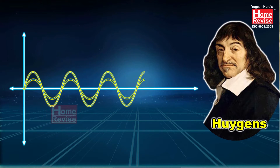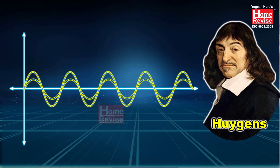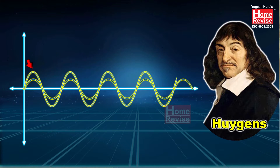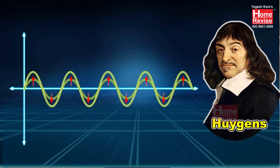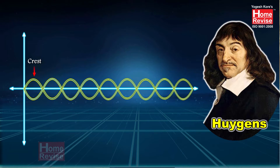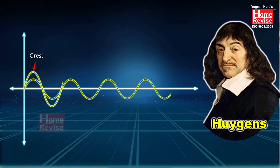Now, since light travels in the form of waves, if we consider two light waves coming together, the second and third light wave will be coming as well. Now if these waves interfere with each other, it is possible that the positive part — called the crest — and the negative part — called the trough — interact. It is possible that the crest of one wave can coincide or get superimposed on the crest of another wave.